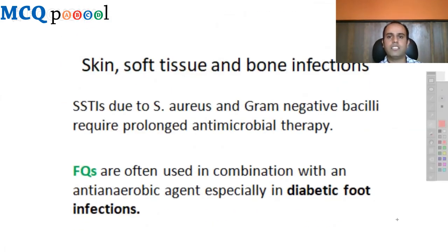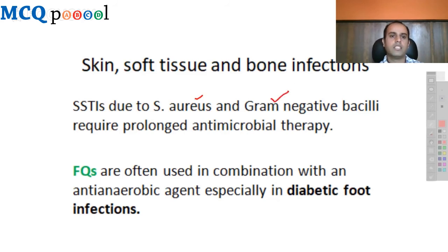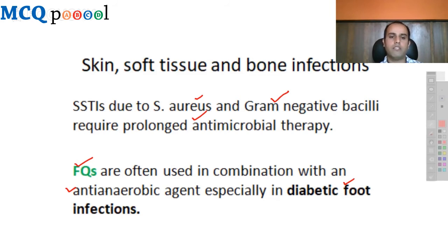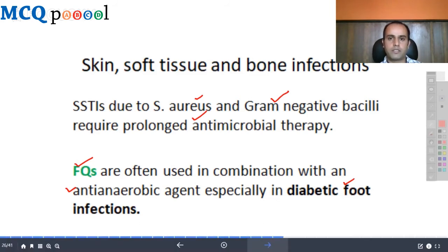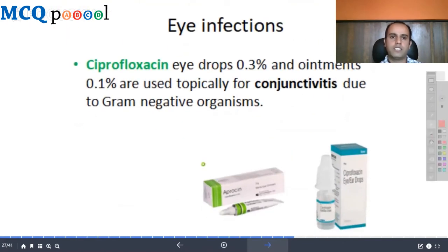For skin, soft tissue, and bone infections due to Staphylococcus aureus and gram-negative bacilli, prolonged antimicrobial therapy is required. Fluoroquinolones are often used in combination with an anti-anaerobic agent, especially for diabetic foot infections, since only fourth-generation fluoroquinolones have good anti-anaerobic activity. All other generations require combination with an anti-anaerobic agent for mixed infections like diabetic foot. For eye infections, ciprofloxacin eye drops and ointments are used for conjunctivitis due to gram-negative organisms.